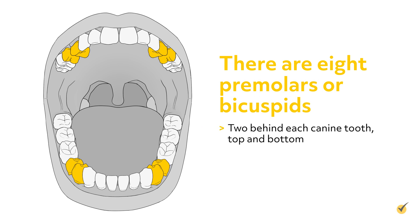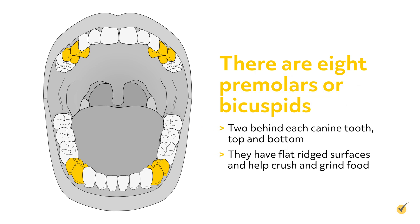There are eight premolars, or bicuspids, two behind each canine tooth, top and bottom. They have flat ridge surfaces and help crush and grind food.